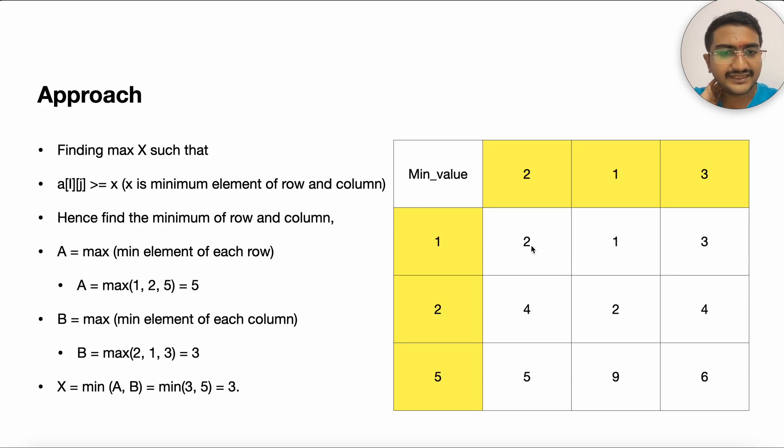So let's say in the given example as well, this was the given input where 2, 1, 3, 4, 2, 4 and 5, 9, 6. Let's find the minimum element of each row and then each column.